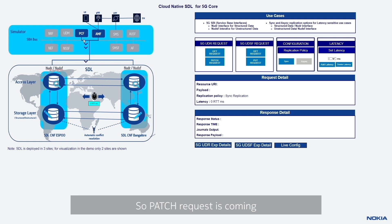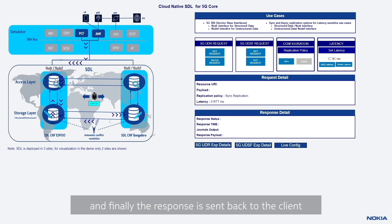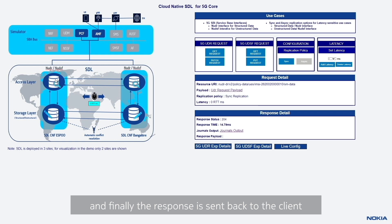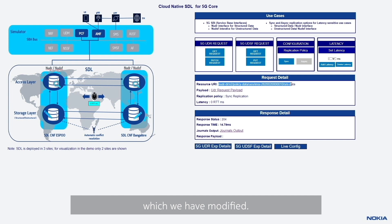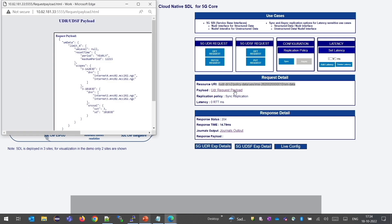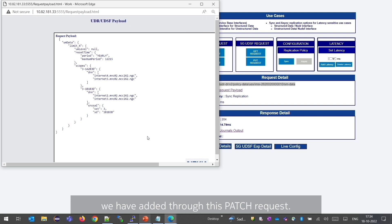The PATCH request comes from PCF, goes to the access layer via the NUDR interface. The request is forwarded to the storage layer, replication to other replicas occurs, and the response comes back and is sent to the client. The request is successfully completed with a 14 millisecond response time. The 5G resource modified is the SM data resource of PCF, with the data input payload added through this PATCH request.